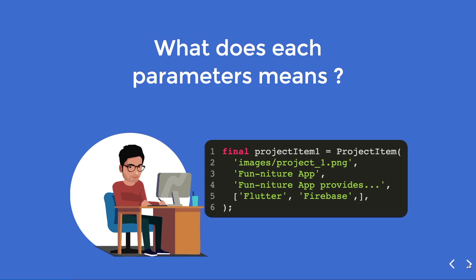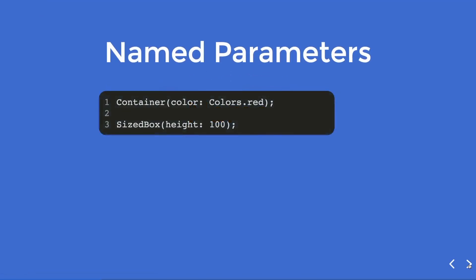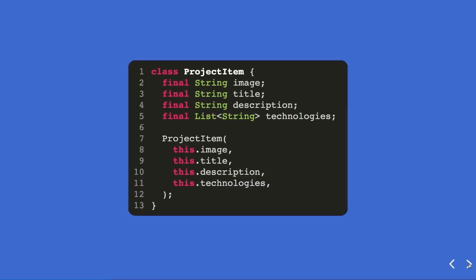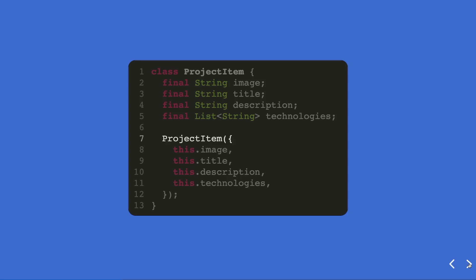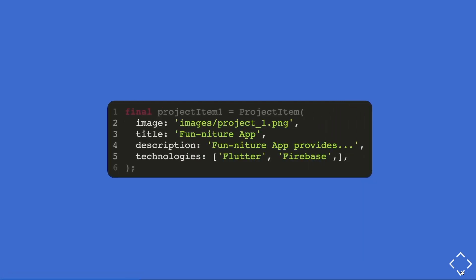He suggests you look up named parameters. Named parameters are like what you've seen when creating widgets in Flutter — for example, a Container with a color named parameter, or a SizedBox with a height. To add named parameters to your ProjectItem, you wrap the constructor parameters in curly brackets. Your ProjectItem object creation then becomes much more readable.